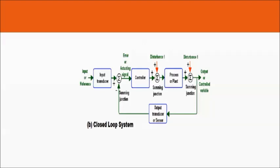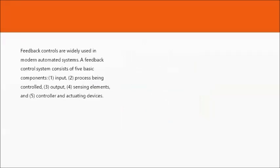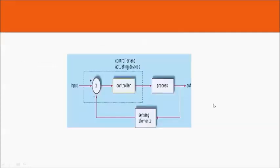These are the five common feedback controls widely used in modern automated systems. A feedback control system consists of five basic elements: input, process being controlled, output, sensing elements, and controller and activating devices. The flow is: input, then controller, then process, then output, then back to sensing elements — this is an example of a closed loop with plus or minus in the summing junction.